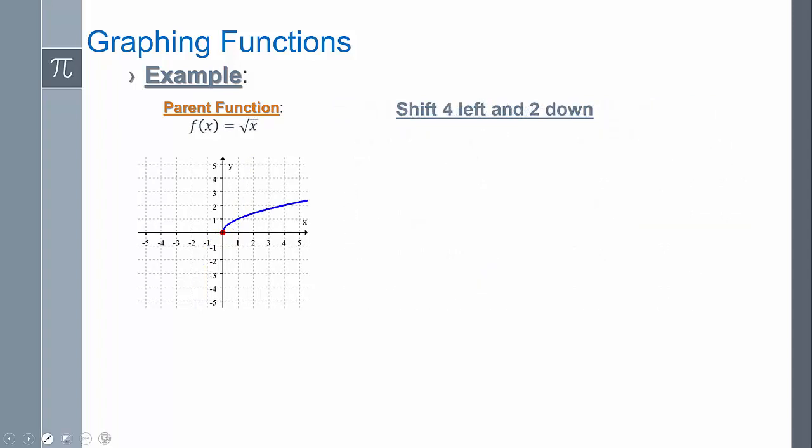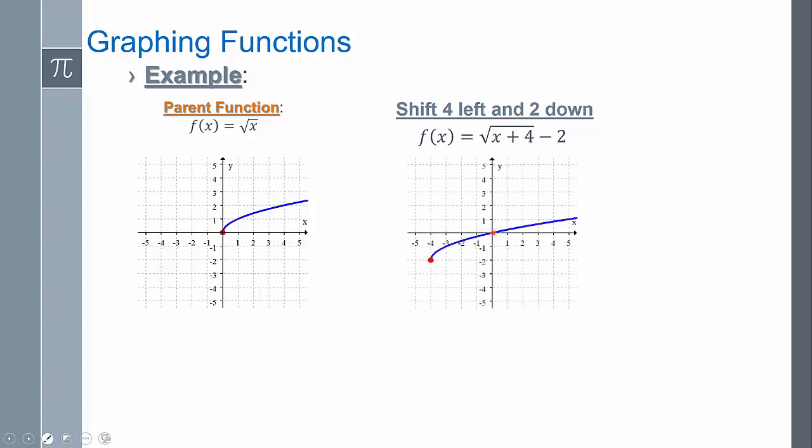Square roots, same thing. If I wanted to shift it four to the left and two down, so that's the square root of X plus four minus two, because my H is negative. So negative, negative is positive, and that's two down. So that's minus two. So this is going to move four to the left and down two. So it started here, moved four to the left, down two, and then you just draw that shape.